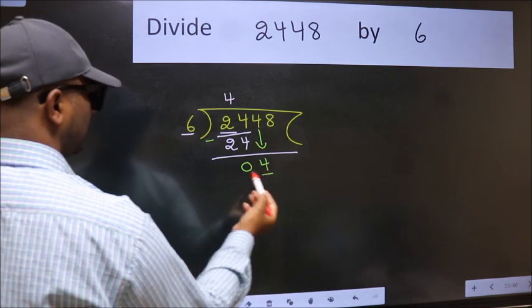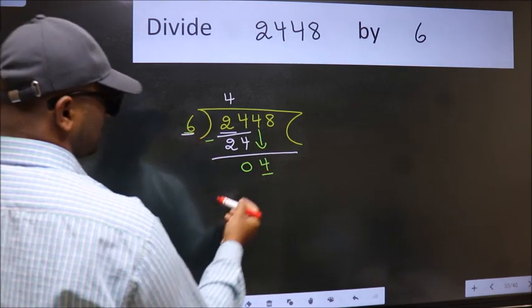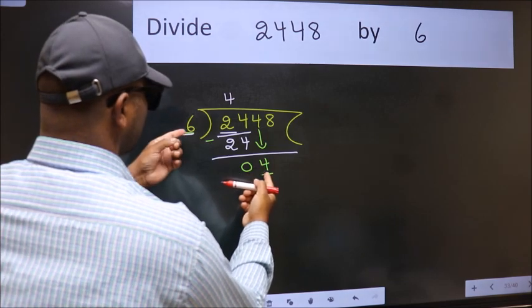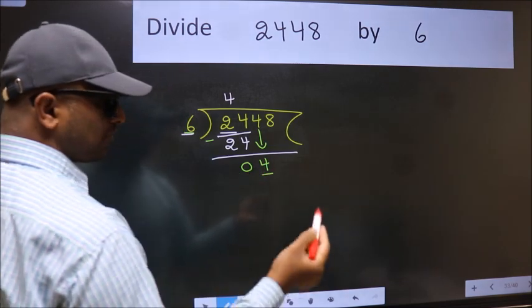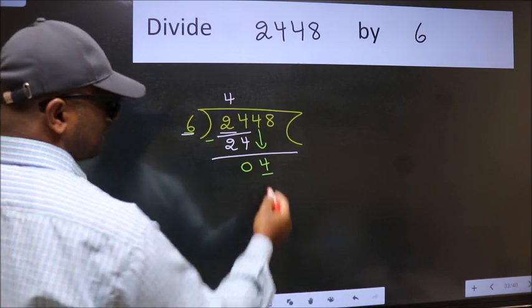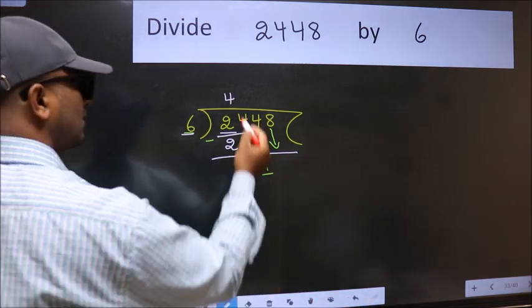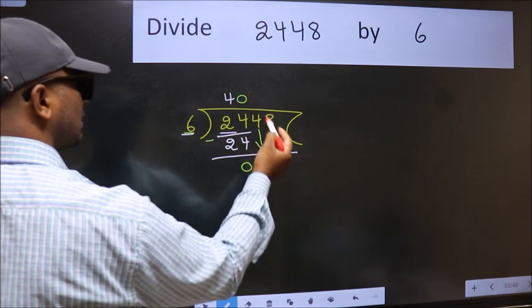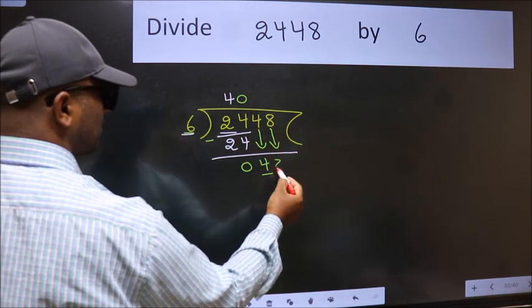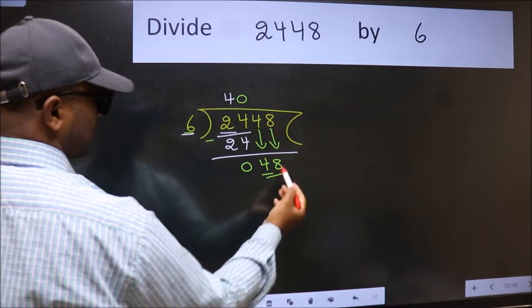Now here we have 4 and here 6. 4 is smaller than 6, so we should bring down the second number. The rule to bring down the second number is put 0 here. Then only we can bring this number down, so 48.